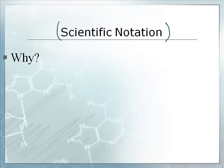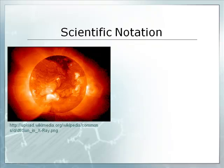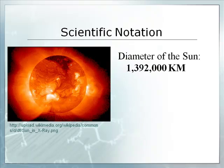Why do we use scientific notation? That way we don't have to write all those zeros before or after a number — it has to do with really big or really small numbers, and also the accuracy of our measurements. For example, the sun is 1.392 million kilometers in diameter. Instead of writing 1,392,000 kilometers, we'd like to write that in scientific notation.